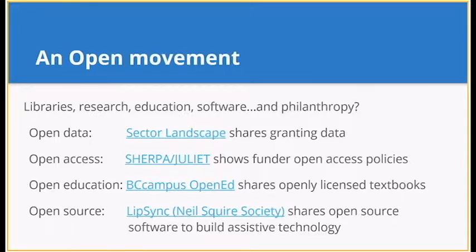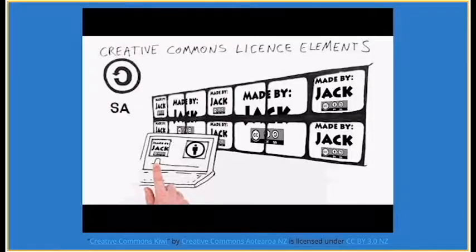We've listed some examples of the open movement in action, though our policy is slightly different from most of these examples because it focuses on open licensing of content created by our grantees in the Field of Interest Granting Program and by Vancouver Foundation. We want to share a short video that helps explain how Creative Commons open licenses work, what they look like, how people use them, and the various choices creators have that allow them to choose how their work can be shared, reused, and built upon.